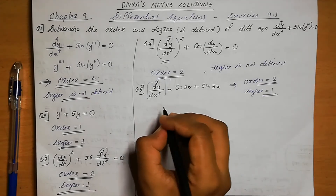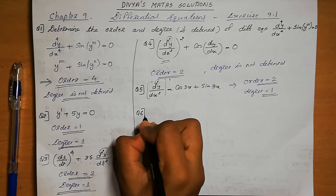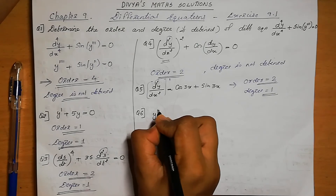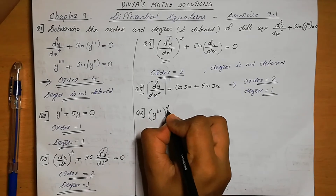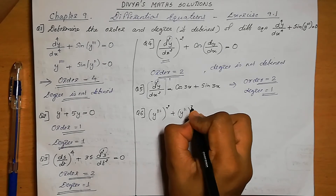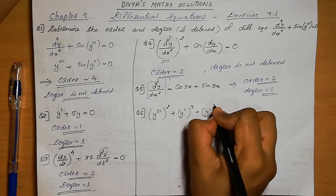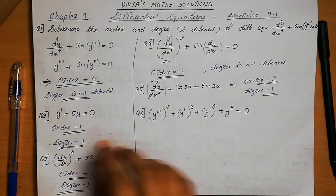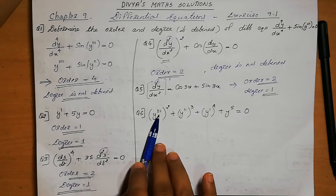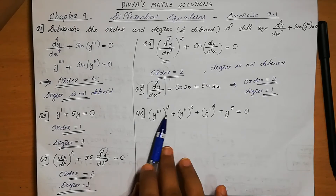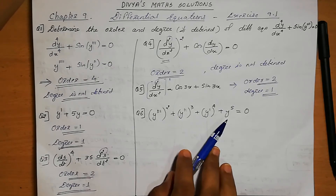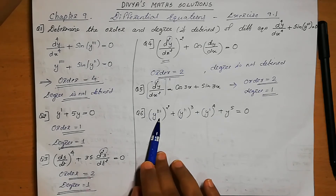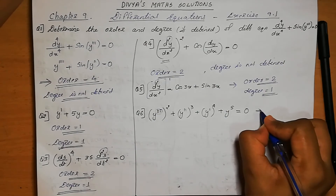Question number 6: We need to find the order and degree. The given differential equation contains a third derivative, a second derivative, and a first derivative. The highest order derivative present is the third order, so the order equals 3.